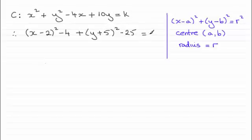And then that equals the constant k on the end. And if we simplify this, that would be x minus 2 all squared, plus then the y plus 5 all squared. And we've got minus 4 minus 25, which is minus 29. Add that to both sides. That would give us k plus 29.